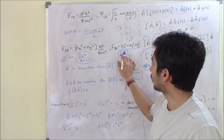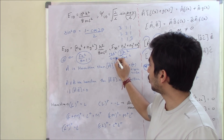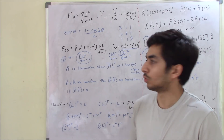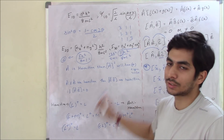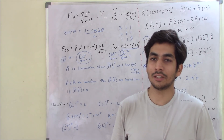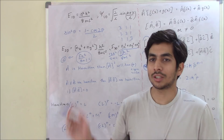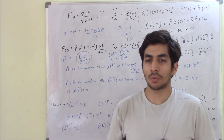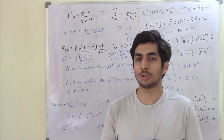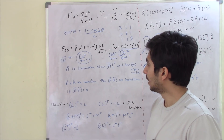If the 3D box energy is 12h²/8mL², the only arrangement is nx = ny = nz = 2, so degeneracy is 1. This is how you find degeneracy for particle in a box problems.